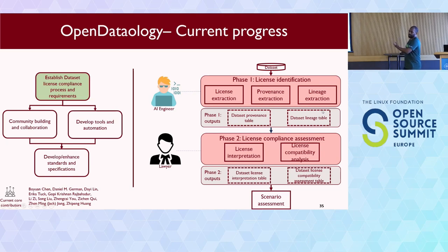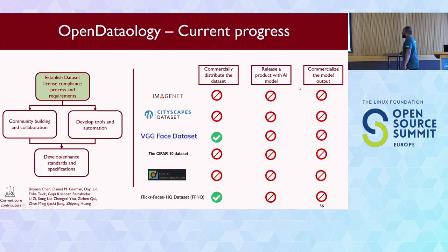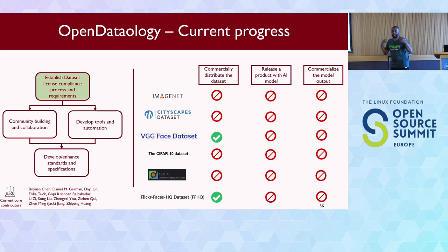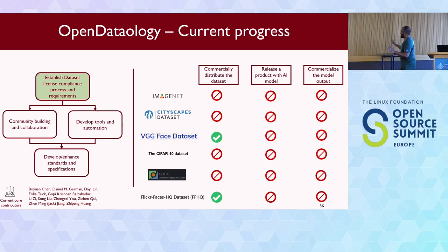Current progress: we have this process and tried to publish a paper around it - it's still in revision but you can find it on arXiv. The results cover only six commonly used datasets - and if you've been developing AI for a while, you might recognize most of them. This is what you can do commercially with them. But I can tell you, if you go to certain pre-trained model sources, they are charging money for some of the models trained on these datasets.